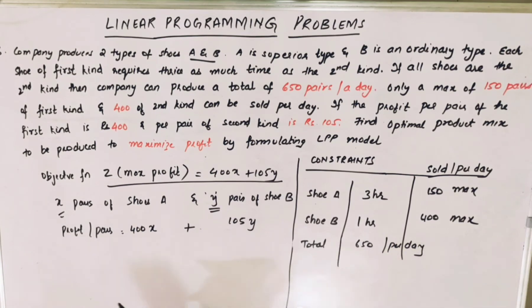Now let's come up with linear equations. So first constraint we will write. It's taking three hours per shoe. So for X pairs, it's going to be 3 into X. And shoe B, it's going to take one hour into Y, because Y pairs of shoes B. What's going to be the first constraint? 3X plus Y. And the total shoes that can be produced per day is 650. So this should be less than or equal to 650. This is the first constraint.